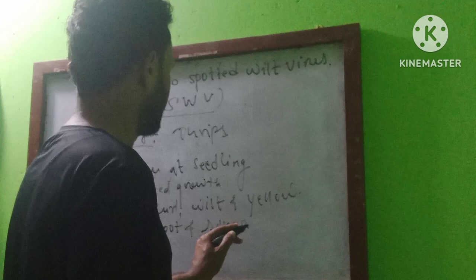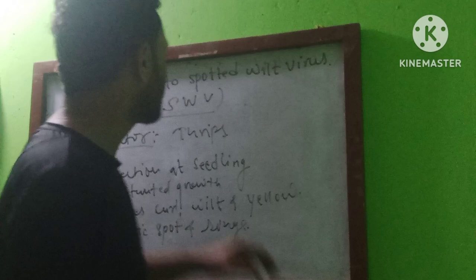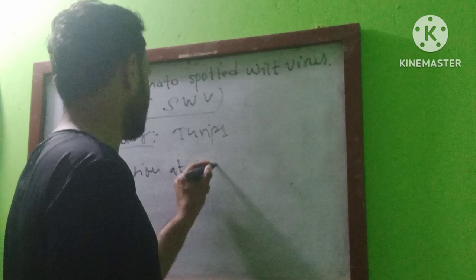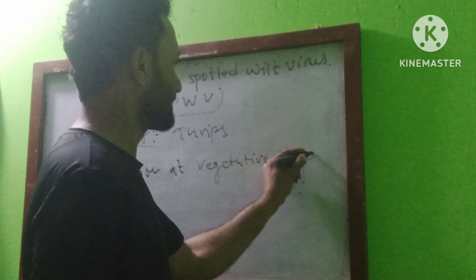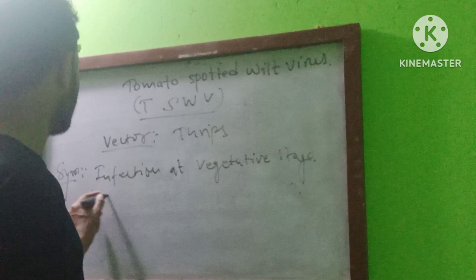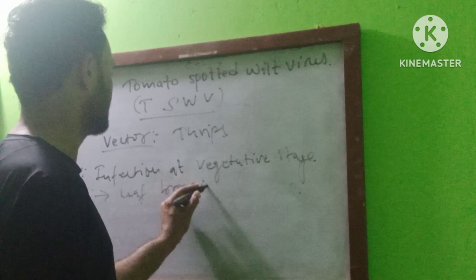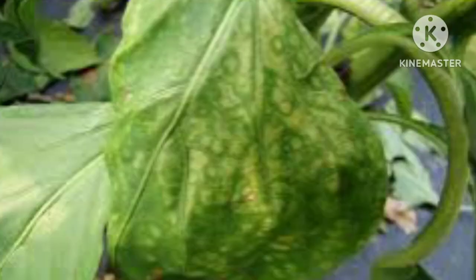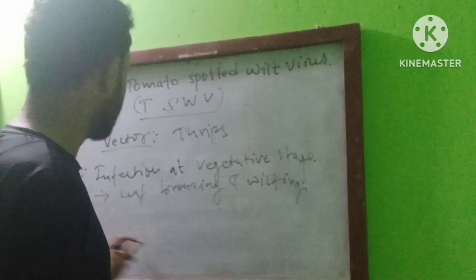At the vegetative stage, you can see leaf bronzing and wilting — leaf bronzing and wilting is observed at the vegetative stage.